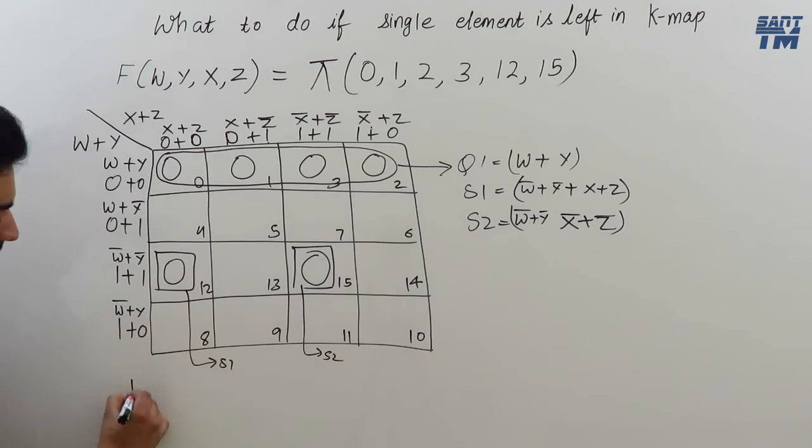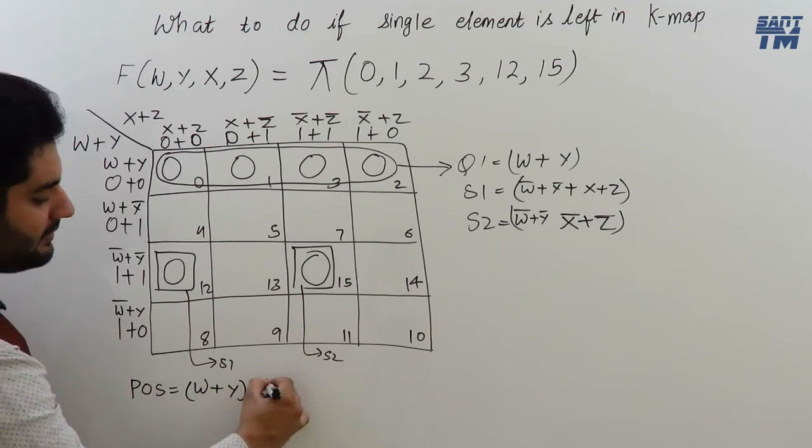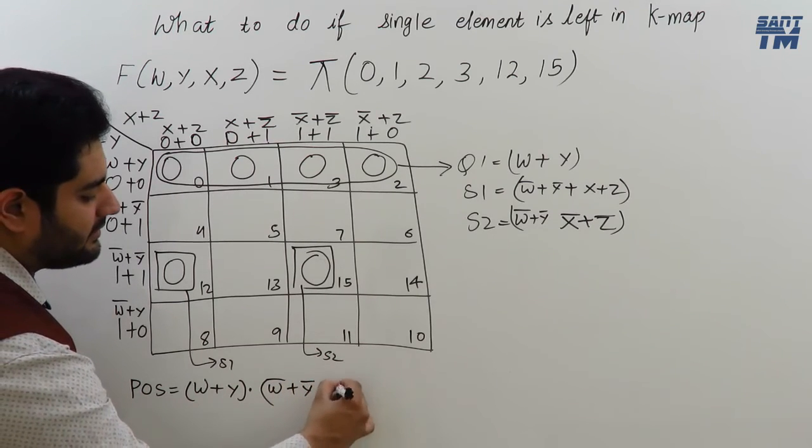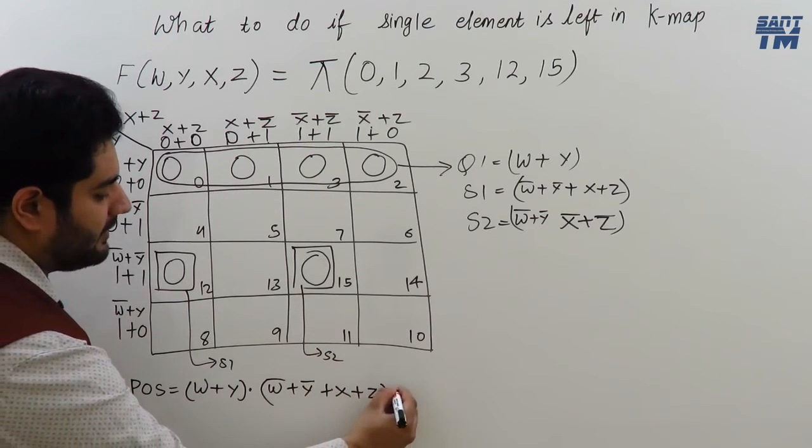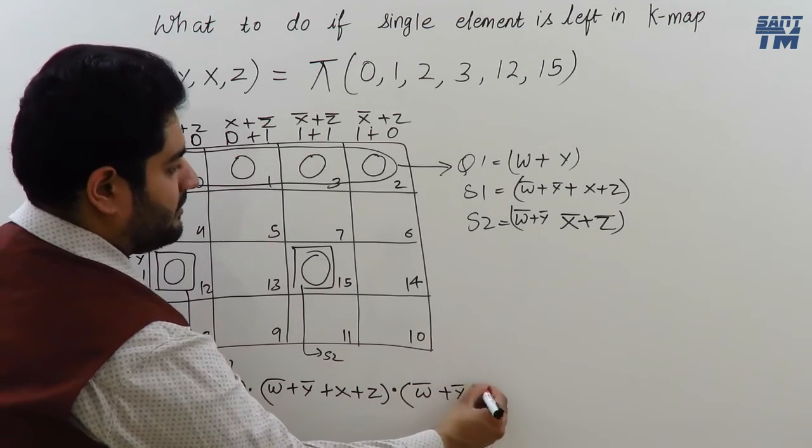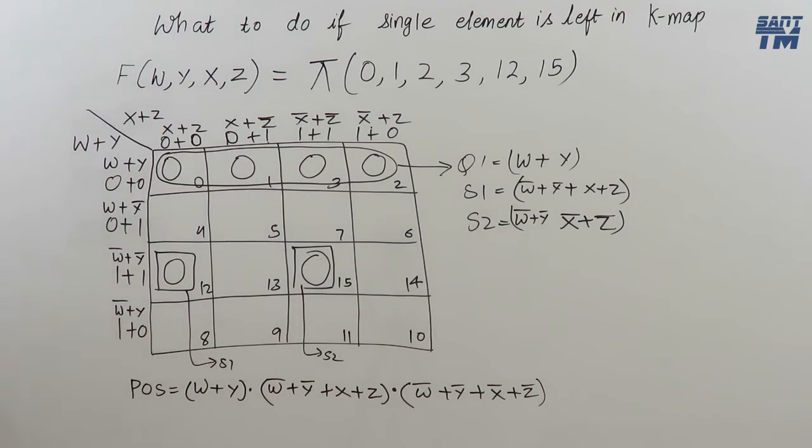Now, we have to write the POS expression. POS expression is product of sums. These are the sums. We have to do their products. W plus Y multiplied with W bar plus Y bar plus X plus Z. So, this is the required POS expression. And, I hope it is clear to you how to deal with the single elements.